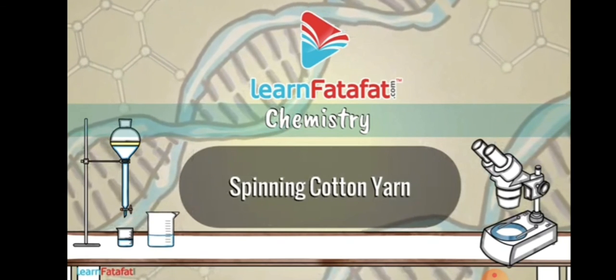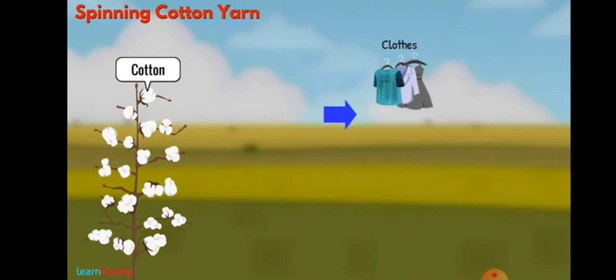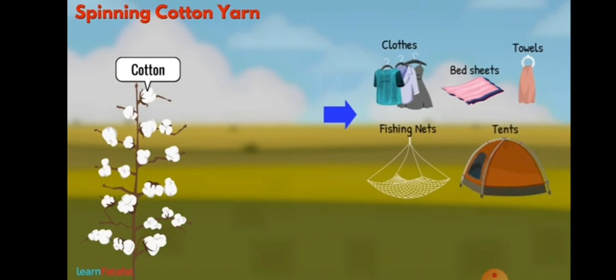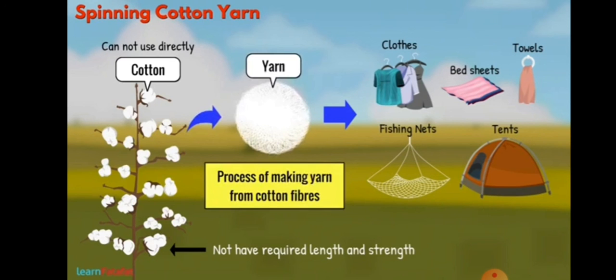We have variety of things made of cotton. For example, clothes, bed sheets, towels, fishing nets, tents, etc. In order to make these things, we cannot use cotton fibers directly. It is because they do not have required length and strength. We need to convert cotton fibers into yarn. The process of making yarn from cotton fibers is called spinning.